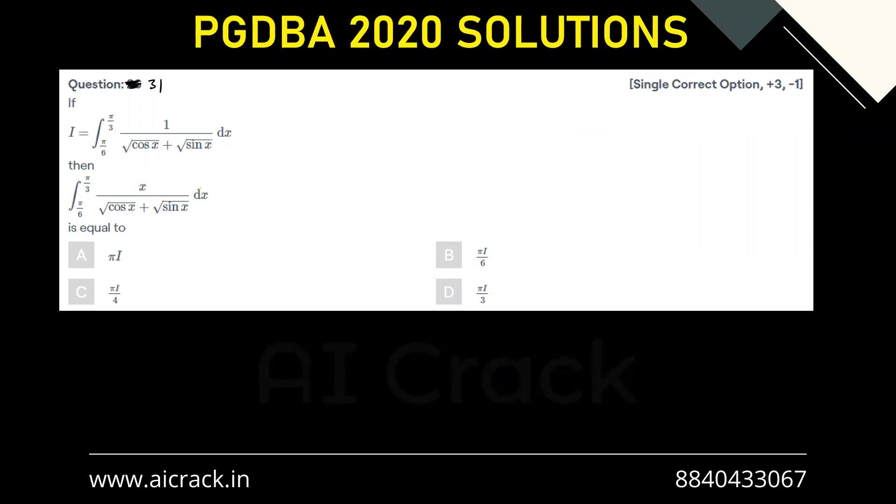So let's use that property. Let's call this as i dash. So i dash would be pi by 6 to pi by 3, x dx upon under root cos x plus under root sine x.